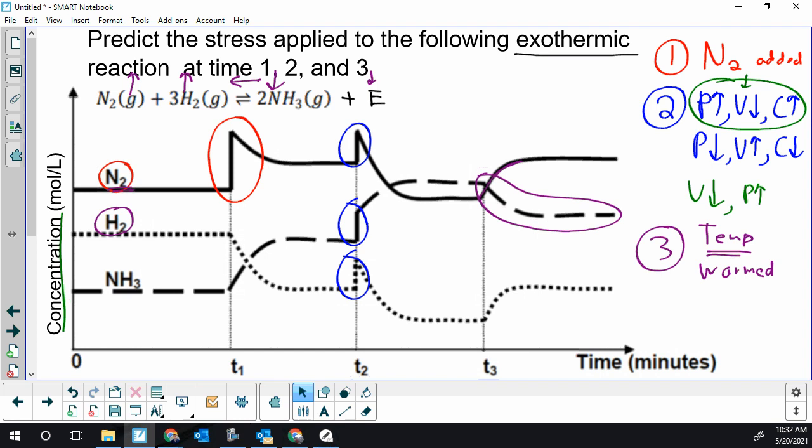So our three stresses were nitrogen gas added, we had a volume decrease at time two, and we had a heating or warming of our system at time three.